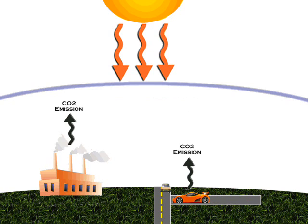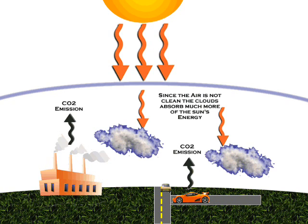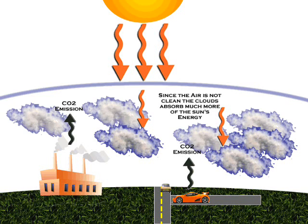With human activity, smoke is emitted by factories and cars. Since the air is not clean, clouds absorb most of the sun's energy, creating more heat. As this happens, more and more clouds form, absorbing more heat and creating a warmer environment.